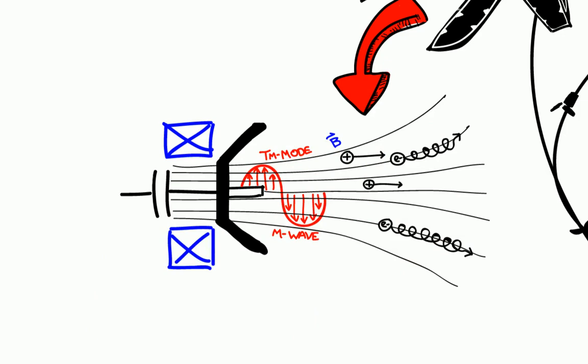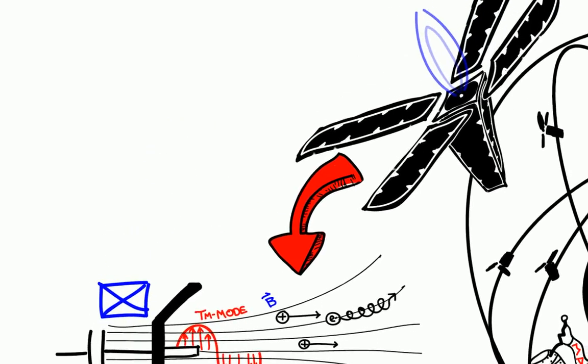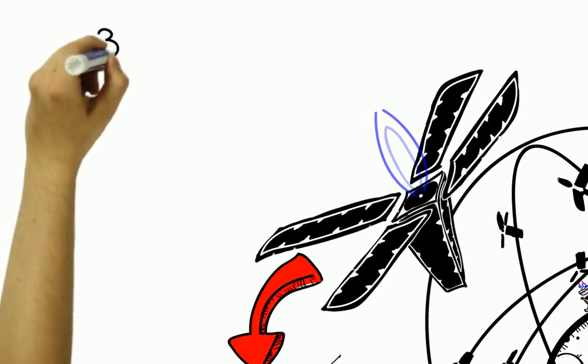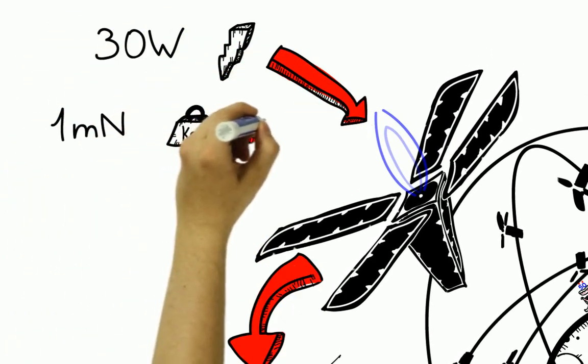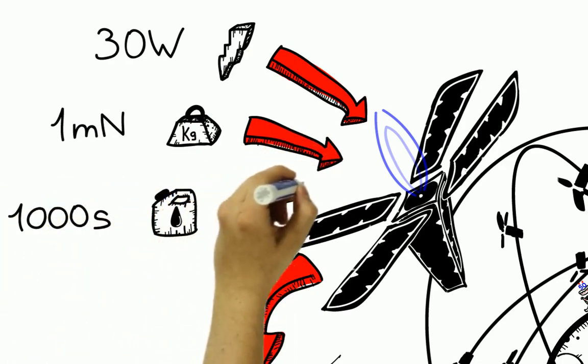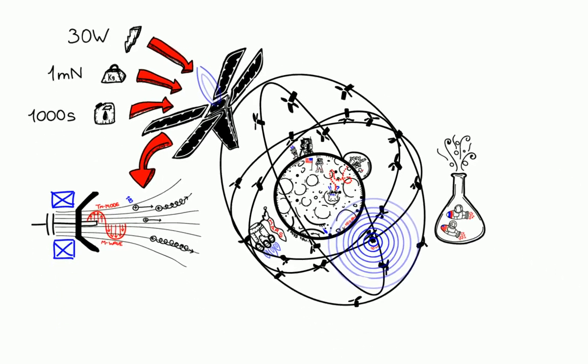It boasts some big advantages, such as no moving parts, no need for a neutralizer, and very competitive foreseeable specifications for the low power spectrum. About 30 W input power, 1 mN of thrust, and 1000 seconds of ISP. These numbers mean you get a lot of mileage on very little fuel, just what we need for this mission.